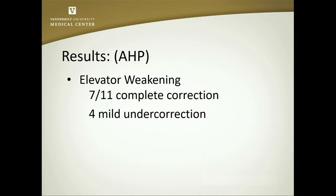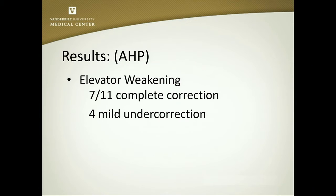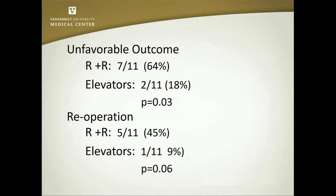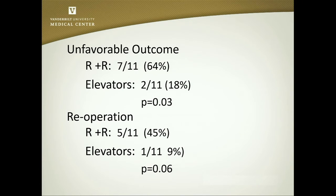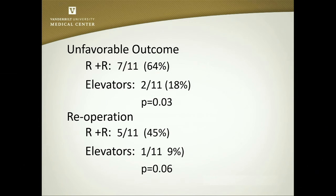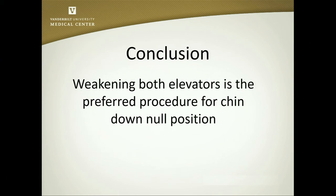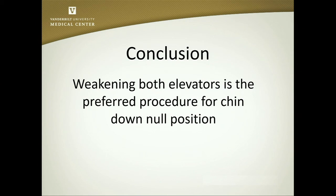In contrast, when I weakened both elevators, I also had 7 of the 11 achieve complete correction. 4 had mild under-correction, but not nearly the substantial under-correction seen when weakening the superior rectus with a resection of the inferior rectus. Only one patient had strabismus. When we compared the unfavorable outcome rate between the R&R and the elevator-weakening approaches, it was substantially better for weakening both elevators, and the re-operation rate was also better. I have concluded and changed my practice pattern as a result, and now weaken both elevators simultaneously as the preferred approach for chin-down head positions.